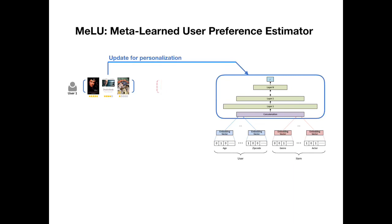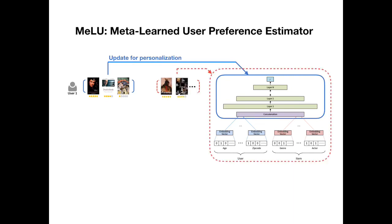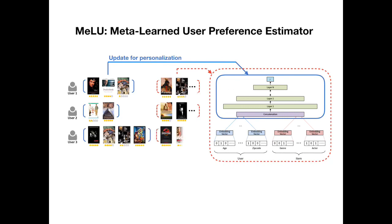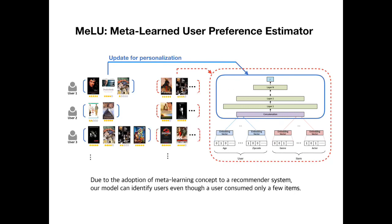After that, based on the user's actual item consumption, we update the whole weights of our model. Like user 1, we conduct the same process for all users. These processes are inspired by model-agnostic meta-learning. Thanks to the adoption of the meta-learning concept, our model can rapidly identify a user even when the user has only a few pieces of evidence.